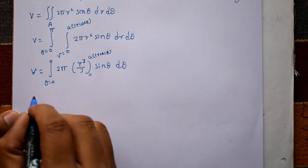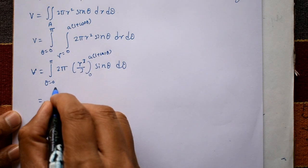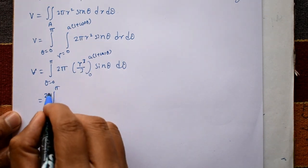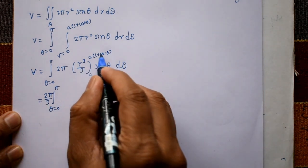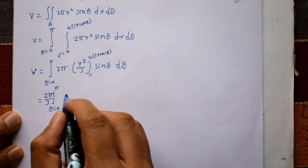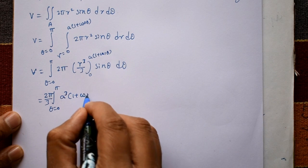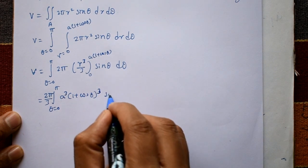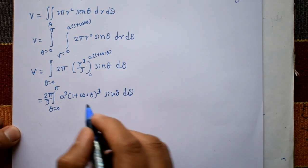Now integrating from 0 to π: the constant 2π/3 is taken outside. Applying the limits, r³ gives a³(1 + cosθ)³. So we have (2π/3) ∫₀^π a³(1 + cosθ)³ sinθ dθ. This integral is difficult to evaluate directly, so we use substitution.